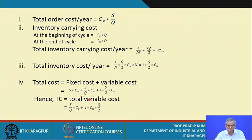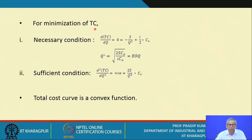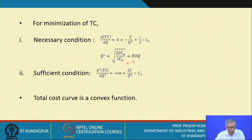For minimization of the total variable cost, the necessary condition is setting the first derivative to zero. This gives Q* = √(2·S·CO / (I·Cu)), which is the economic order quantity. For the sufficient condition, the second derivative with respect to Q must be positive: it equals 2S/Q³ × CO, which is always positive. Therefore, the total cost curve is a convex function.